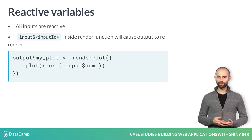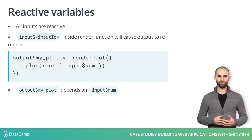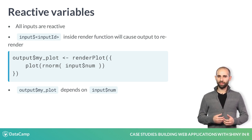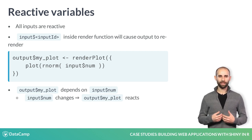For example, in this code, the myplot output depends on the num input. This means that whenever the num input changes, myplot will react and re-evaluate.